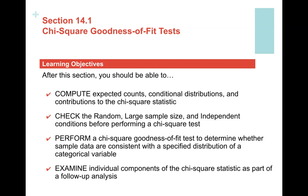We're going to have some hypothesized or claimed distribution of a categorical variable, and we'll see whether our sample matches it. If we find statistically significant results, then we do what's called a follow-up analysis, or FUA. We do the follow-up analysis only if we get statistically significant results.